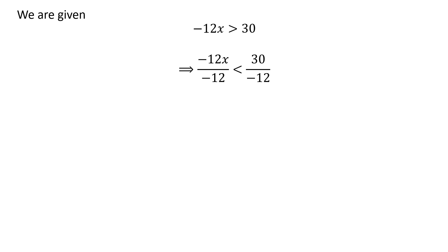So dividing the inequality by -12 gives us (-12x)/(-12) < 30/(-12). Further simplification gives us x < -2.5.